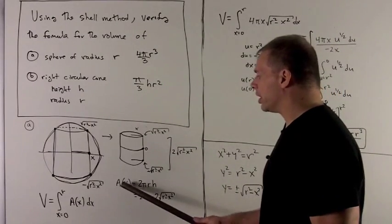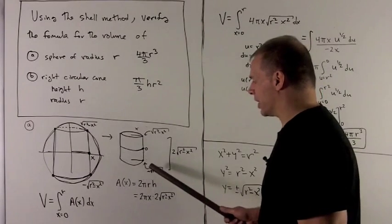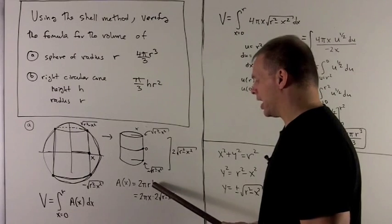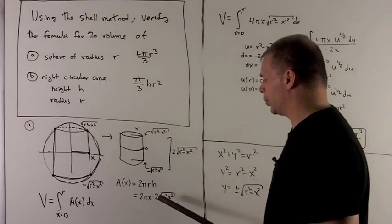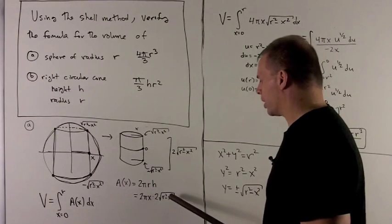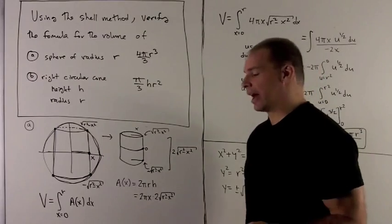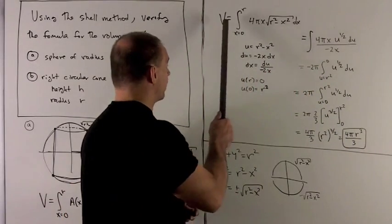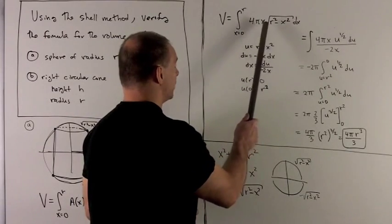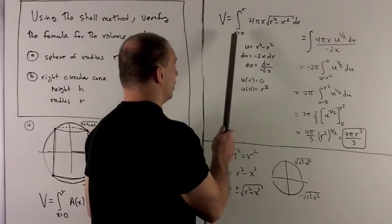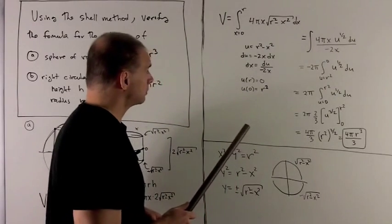We have radius x, height 2√(r² - x²). The area of the cylinder is just 2πr, the circumference of the circle at the base, times the height. So that's 2πx times 2√(r² - x²). Now I can go ahead and get a volume. Plug everything into our volume equation. This is the area of the cylinder at x. Our limits are going to go from 0 to r.